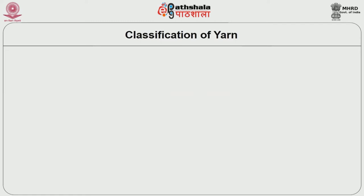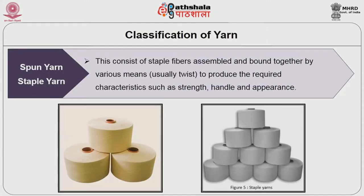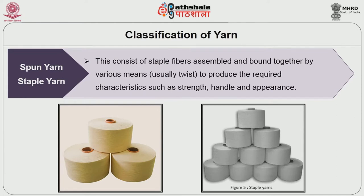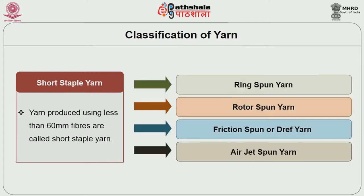Now we are going to look into a brief introduction about all the yarns. The first category is staple yarn, also called spun yarn. Spun staple yarns consist of staple fibers assembled and bound together by various means, usually twist, to produce the required characteristics such as strength, handle, appearance, etc. The first yarn under short staple yarn is produced using less than 60 mm fibers, called short staple yarn. The first category is ring spun yarn.